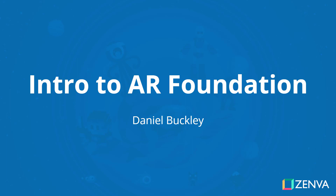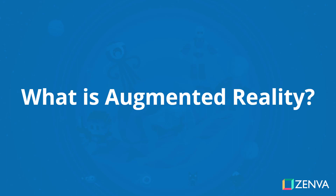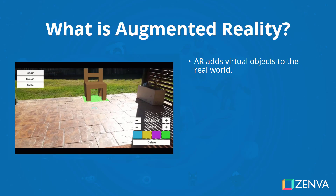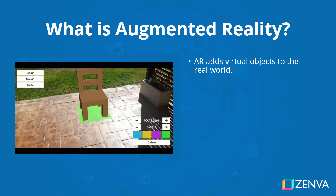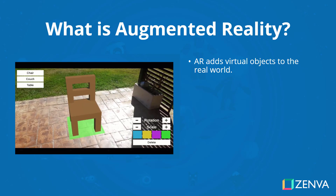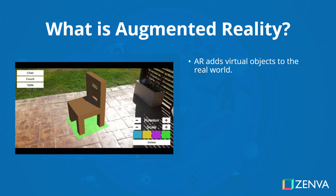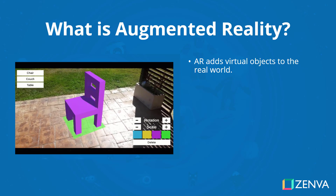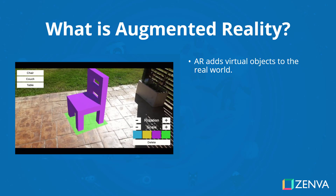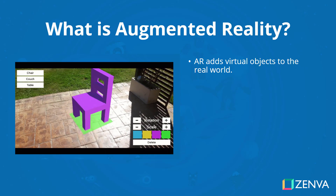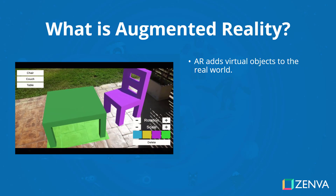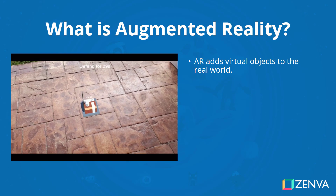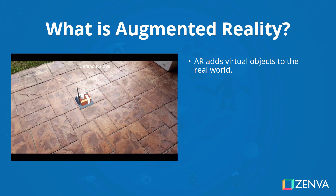First of all, what exactly is augmented reality? Well, augmented reality is basically adding virtual objects into the real world. This can be stuff such as 3D models and maybe even measurements. This is not to be confused with virtual reality — virtual reality is creating an entirely virtual environment around you, whereas augmented reality is just augmenting your existing one.